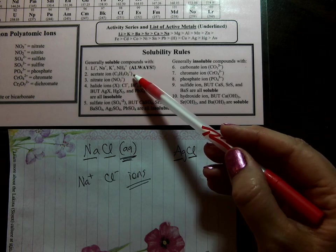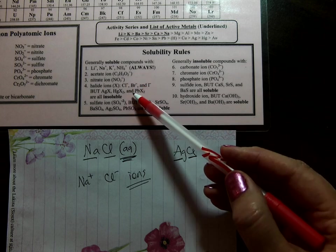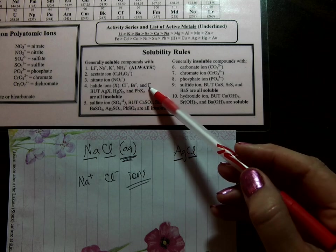Rule number 2 is for acetate, C2H3O2 minus, nitrate. And then rule number 4 has Cl in it. It's also for Br and I.